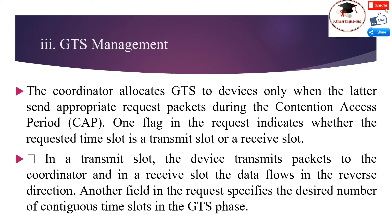If the coordinator has sufficient resources, it generates a GTS descriptor for time slot zero, indicating the available resources in the descriptor field. Upon receiving such a descriptor, the device may consider renegotiation. If the device receives no GTS descriptor within a GTS descriptor persistent time after sending the request, it concludes that the allocation request has failed. A GTS is allocated to a device on a regular basis until it is explicitly deallocated. The deallocation can be requested by the device by means of a special control frame, after which the device shall not use the allocated time any further.